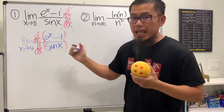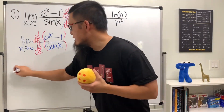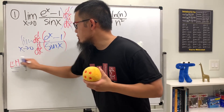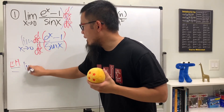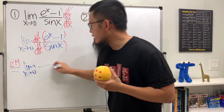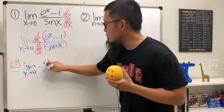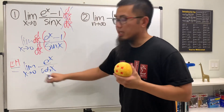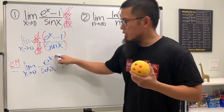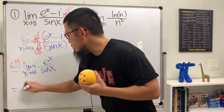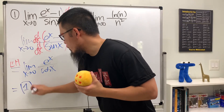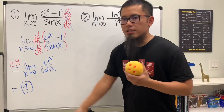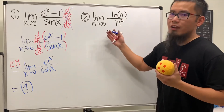Do the same thing on the bottom. Based on L'Hôpital's rule, we have the limit as x goes to zero — on the top it's going to be e^x, on the bottom it's cosine x. Plugging in zero gives us one over one, so the answer is equal to one. Perfect.